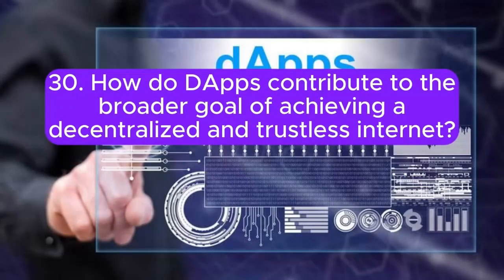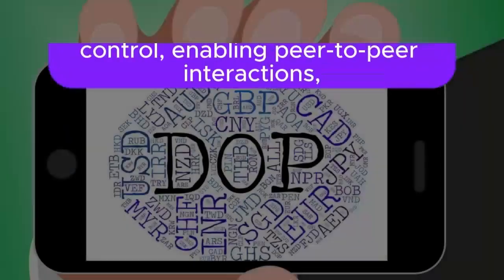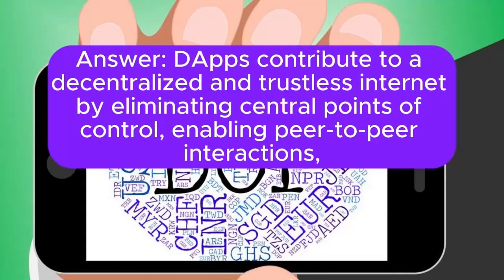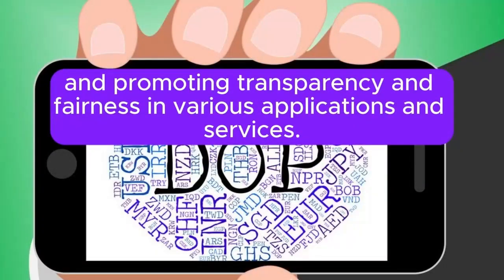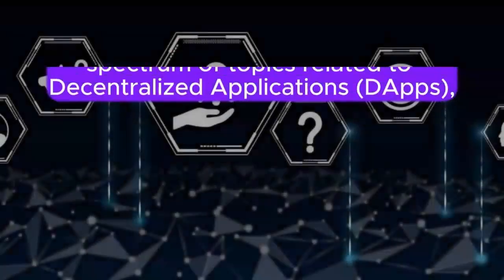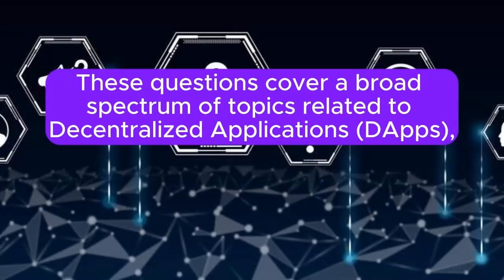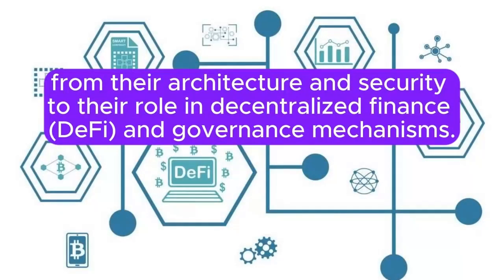30. How do DApps contribute to the broader goal of achieving a decentralized and trustless internet? Answer: DApps contribute to a decentralized and trustless internet by eliminating central points of control, enabling peer-to-peer interactions, and promoting transparency and fairness in various applications and services. These questions cover a broad spectrum of topics related to decentralized applications, from their architecture and security to their role in decentralized finance and governance mechanisms.